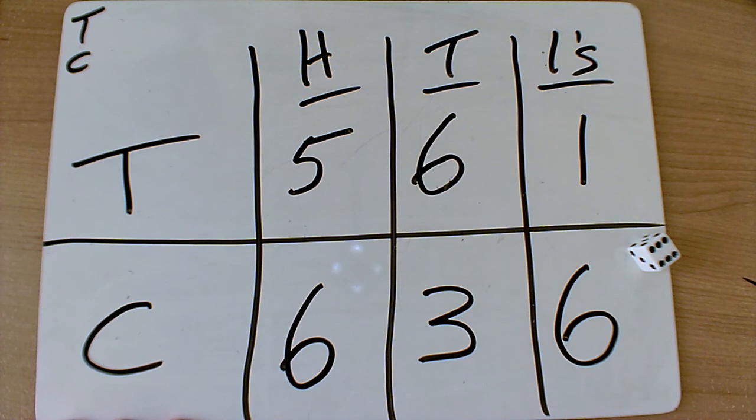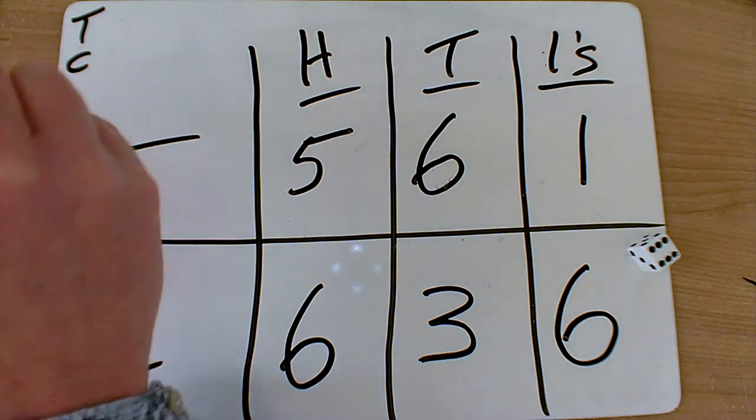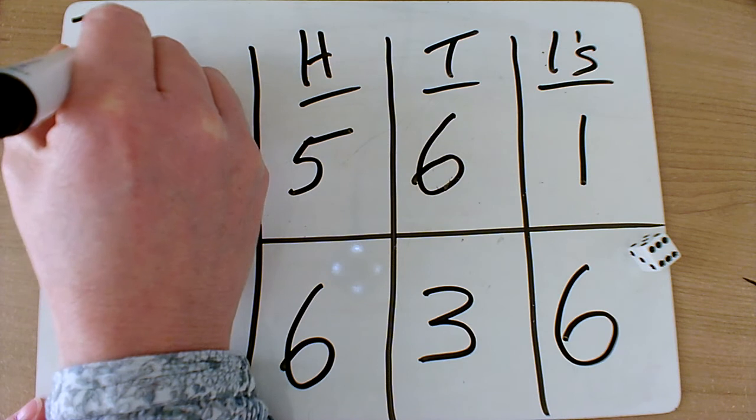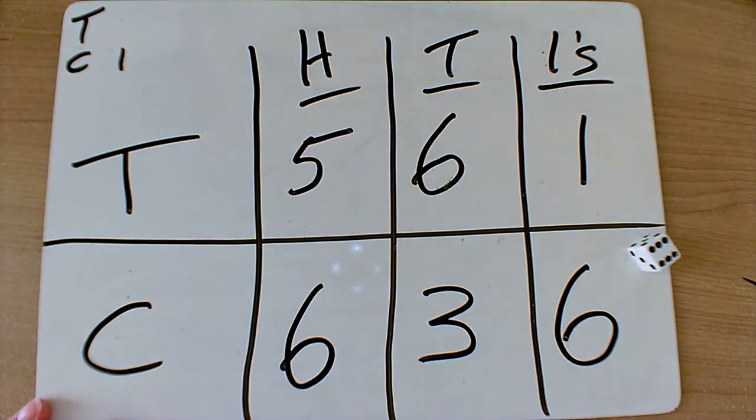If you want to play this with a parent or a brother or sister, you can. Let's just keep a tally chart, so I'm going to put one for the child tally and the teacher has zero. Maybe the first one who gets to five.